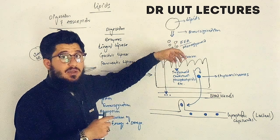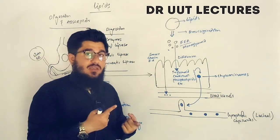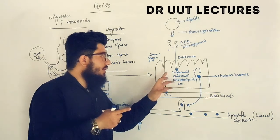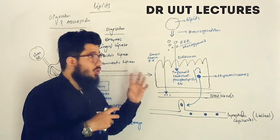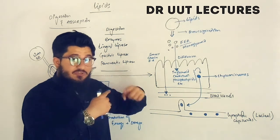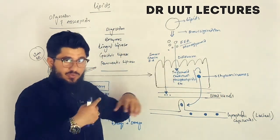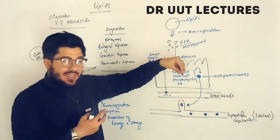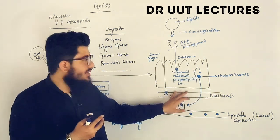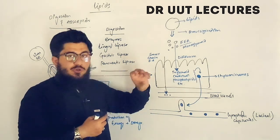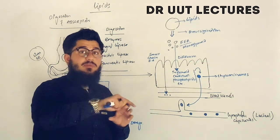Regarding long-chain free fatty acids and monoglycerides, these are diffused into the enterocytes where they are resynthesized — converted back into triglycerides, cholesterol, phospholipids, and so on. Some proteins and vitamins also join these triglycerides, cholesterol, and phospholipids, and a new structure is produced known as chylomicrons. These resynthesized triglycerides are carried by the chylomicrons into the lymphatic capillaries, bypassing the blood vessels directly due to their larger size and diameter.